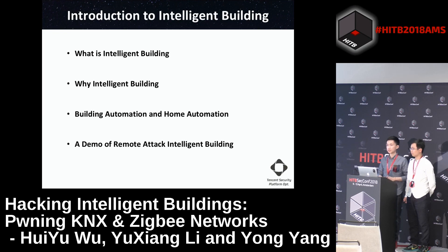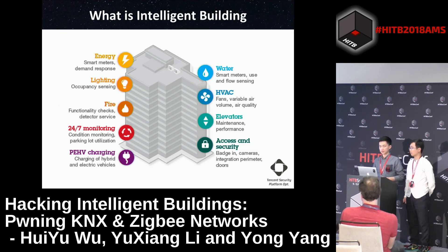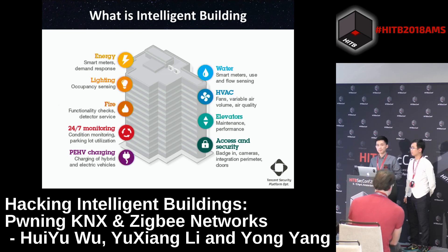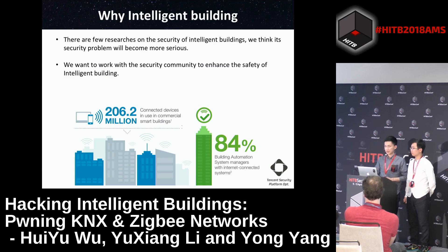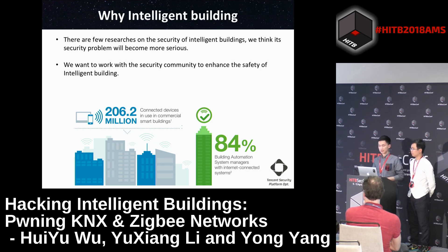In this part, I will introduce intelligent buildings, divided into four parts. We think an intelligent building is a building controlled by advanced smart building management. It contains systems such as lighting control, fire detection, and access control. There are two main reasons we chose intelligent buildings as our research target: first, there are few researchers on the safety of intelligent buildings; and second, with more IoT devices being used in intelligent buildings, security problems will become more serious. We also want to work with the security community to enhance the safety of intelligent buildings.